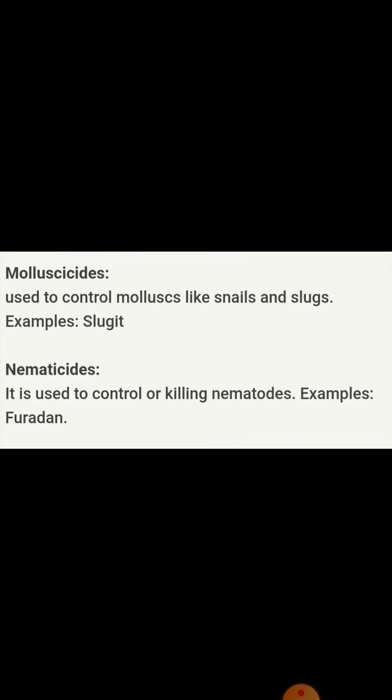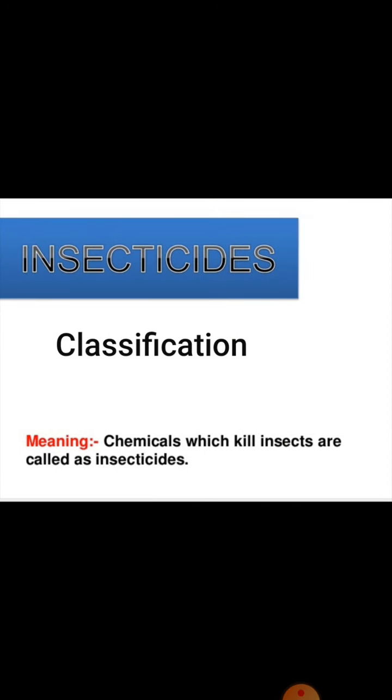So all these chemicals come under agrochemicals. Out of these different types of pesticides, we will discuss particularly, as per the syllabus, about insecticides and their classification. An insecticide may be defined as a substance or mixture of substances intended to kill, repel, or otherwise prevent insects.